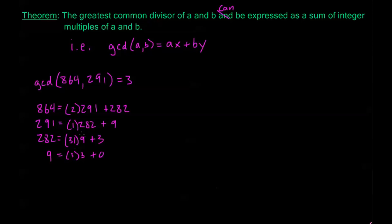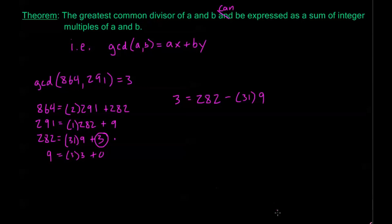Now I'm going to use these steps of the Euclidean algorithm to unravel the linear combination. There's not a unique linear combination, but this process will give us one of them. My GCD is 3, so looking at that line first, I can say 3 is equal to 282 minus 31 times 9. Now I have this 9 here, and in the previous equation I have that 9 equals 291 minus 282.